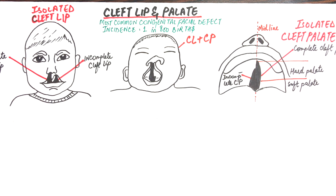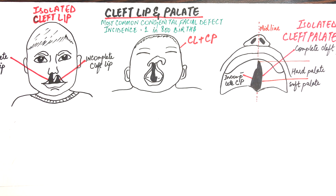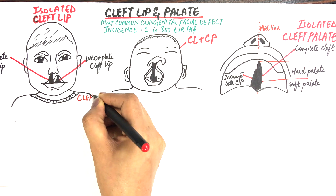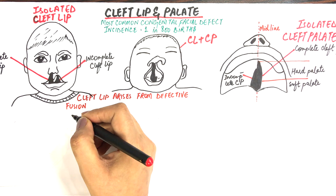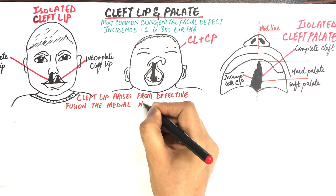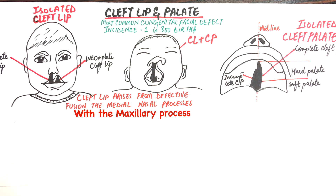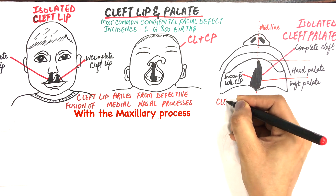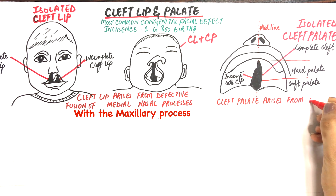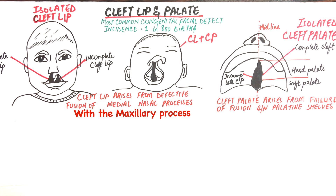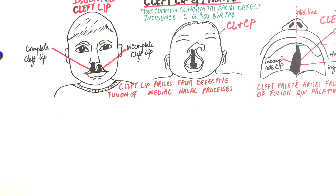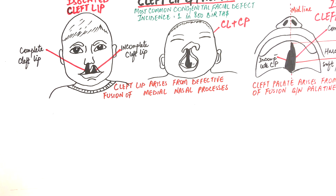These facial clefts arise from incomplete closure or maturation of embryonic processes. A cleft lip arises from defective fusion between the medial nasal processes along with the maxillary process, while cleft palate results from failure of fusion between the palatal shelves. To have a more in-depth understanding of these facial clefts and their origination, let's recap the process of development of the face.